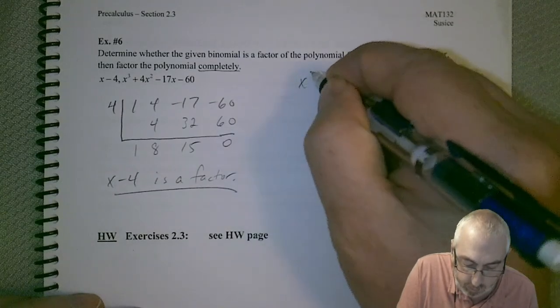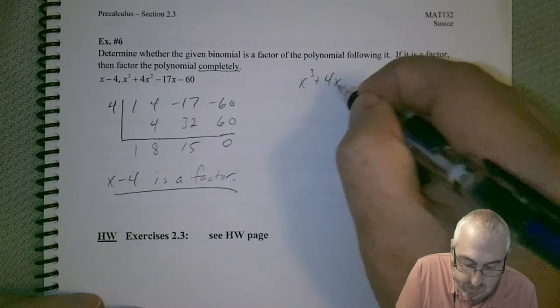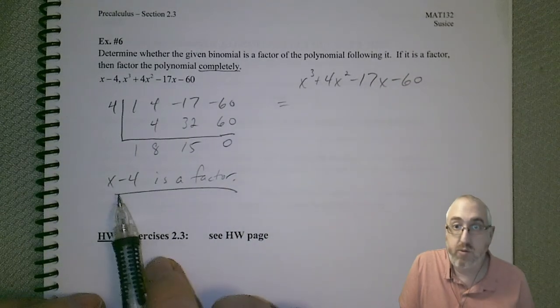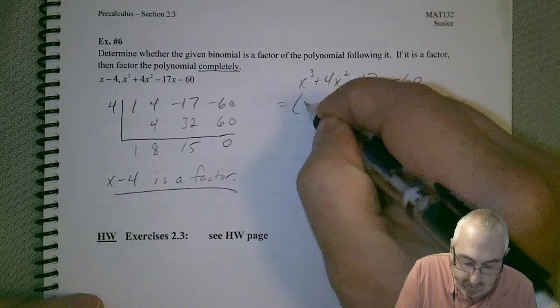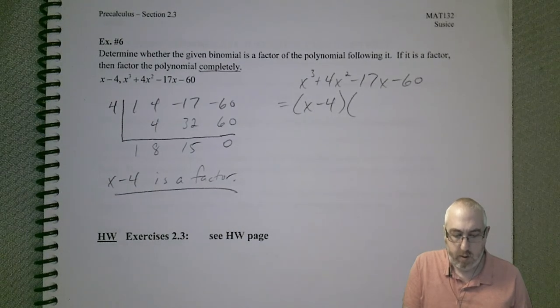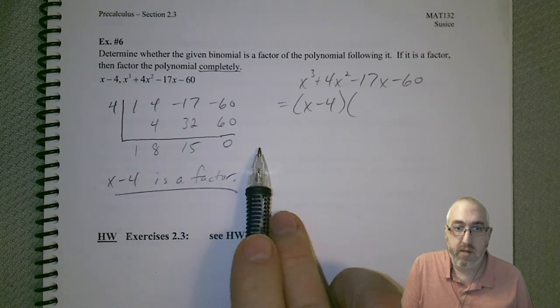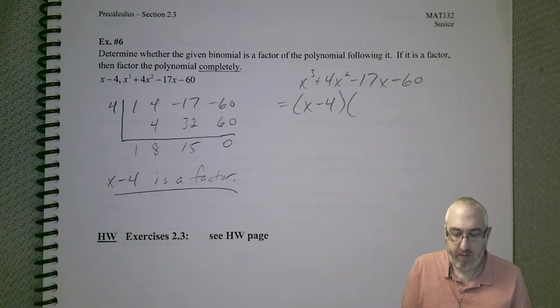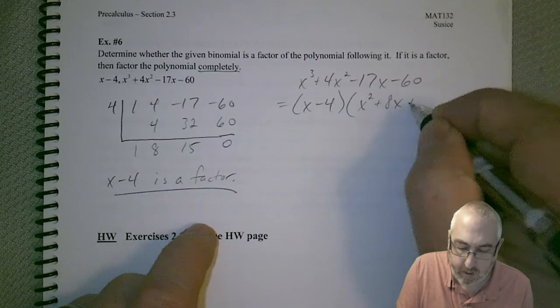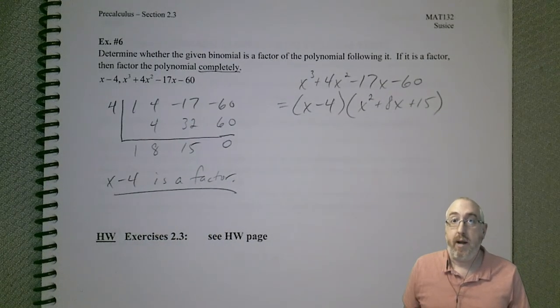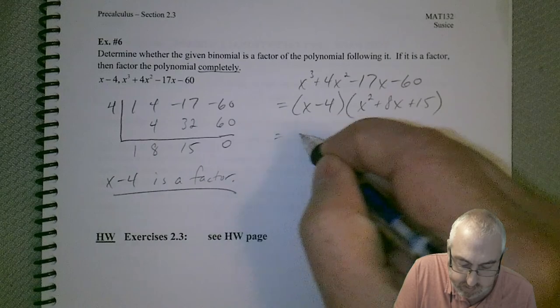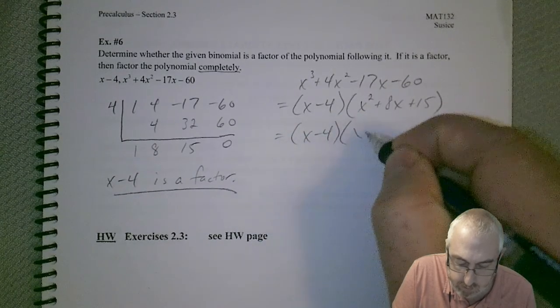So, we started off with x³ + 4x² - 17x - 60. And, we concluded that this was a factor. So, we can now write it as (x - 4) times what? Well, remember, we have these values down here, which gives us information about what's left after you factor. So, we know we have an x², we have an 8x, and we got a 15. And, so, now, what would we do to factor this the rest of the way? Well, we do have a quadratic. We should be able to break that down. It's actually a nice quadratic.